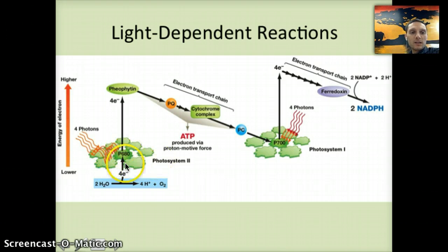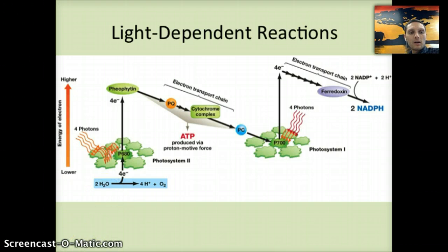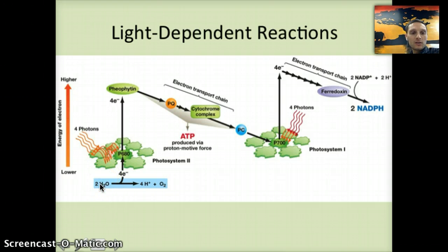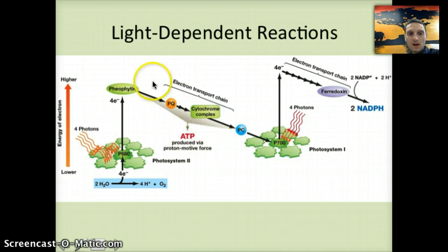Where do these electrons come from that are originally at the P680 pigment? Those electrons are produced through a process called photolysis — the splitting of water to produce hydrogen ions, oxygen, and electrons. Four electrons get moved into the photosystem. The hydrogens then go into the lumen, or the internal part of the thylakoid. The O2, or oxygen, is released. So water is necessary to provide those electrons and the hydrogens used in the electron transport chain.